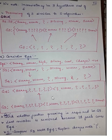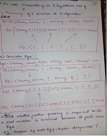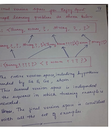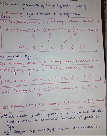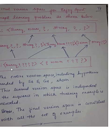Further pruning is not required. G4 is the final generic hypothesis. This is our final hypothesis obtained from example 4. Now give your final conclusion: write S4 and G4 from the previous steps. This gives you the entire final version space for the enjoy sport concept learning problem. The learned version space is bounded by S4 and G4.